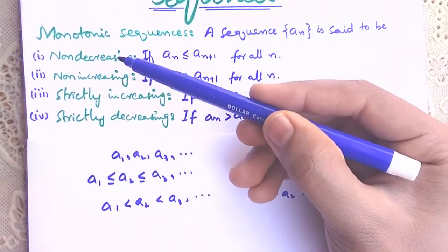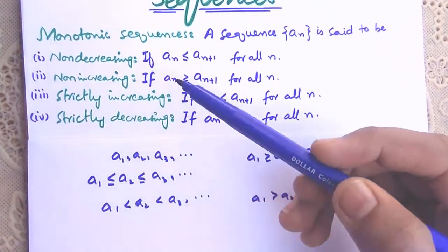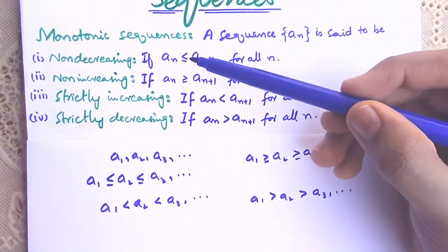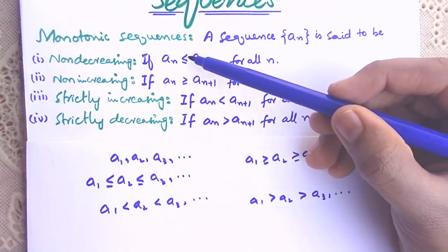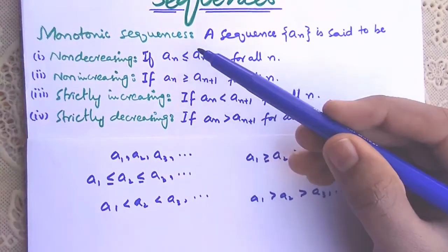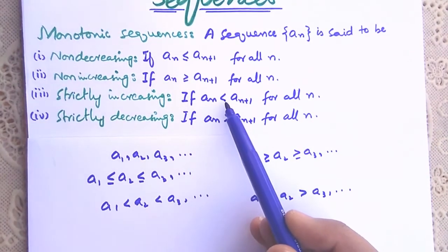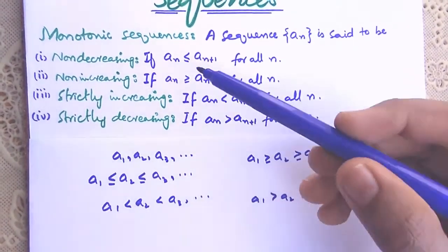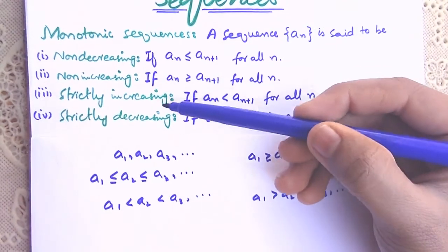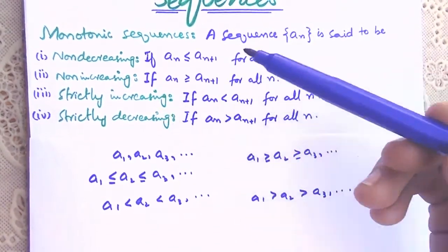Now, what is the difference between non-decreasing and strictly increasing? Notice that non-decreasing involves inequality with equality (≤), but strictly increasing involves only strict inequality (<). Similarly for non-increasing and strictly decreasing.